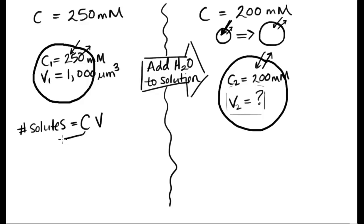Let's remind ourselves of why that is. So remember that the concentration is the number of solutes divided by the volume. So if I multiply that by the volume, what I end up with is the number of solutes in my cell.